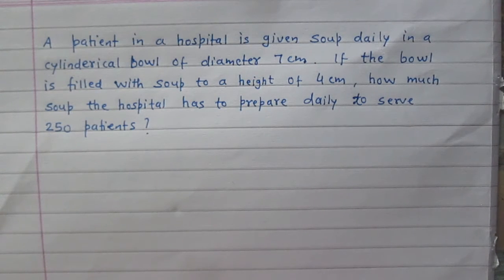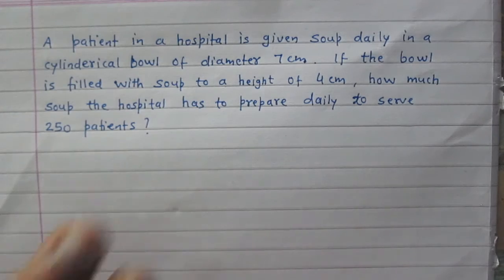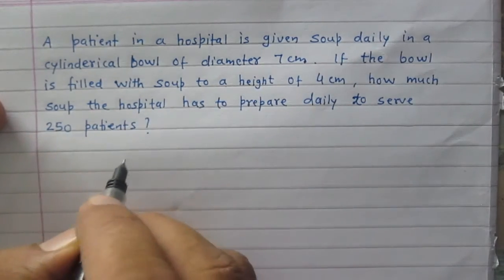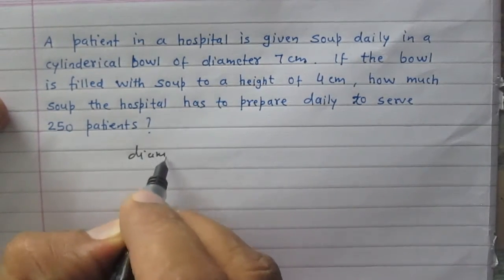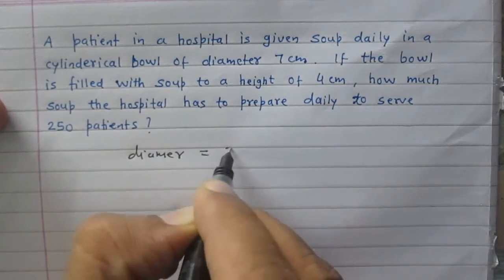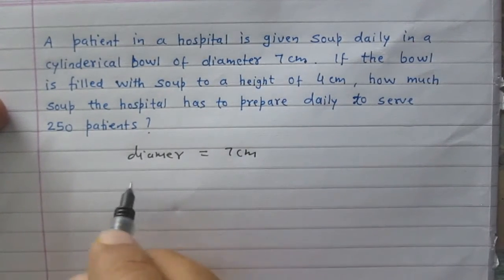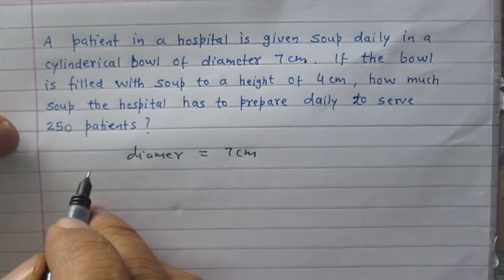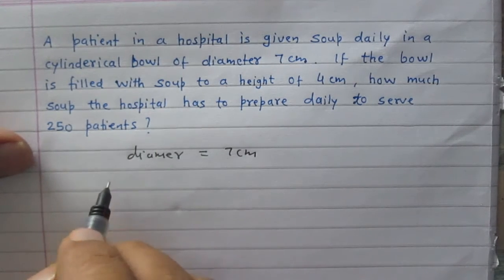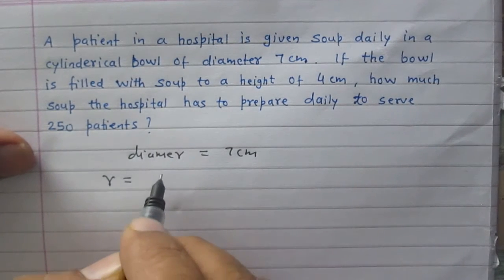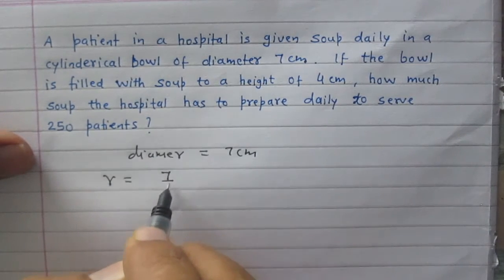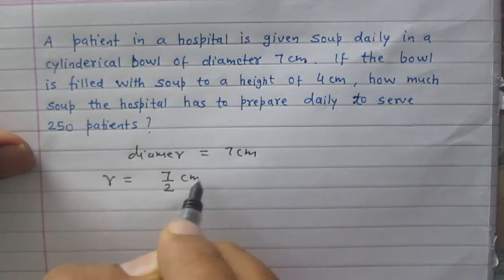We are given that a single patient is served soup in a cylindrical bowl. The diameter of the cylindrical bowl is 7 cm, so the radius is just half of the diameter. Let R stand for the radius, so radius is 7 by 2 cm.